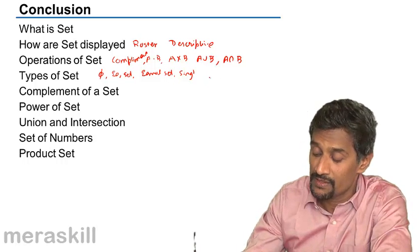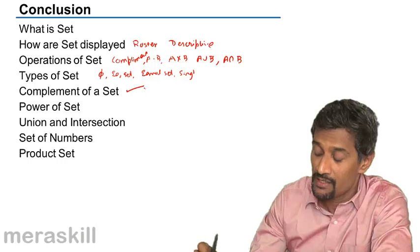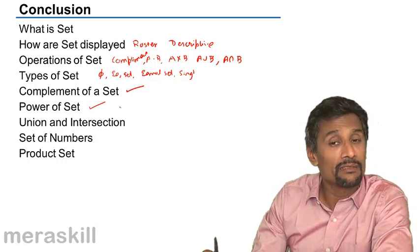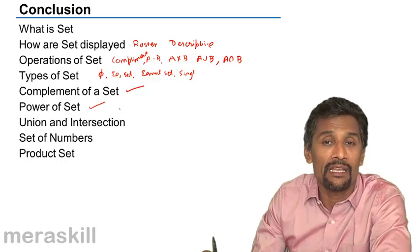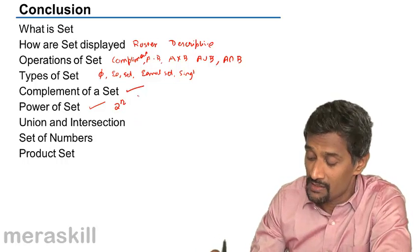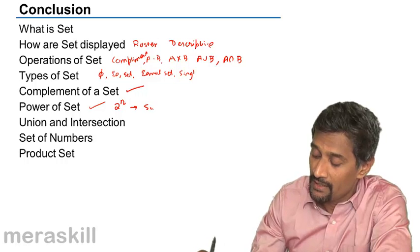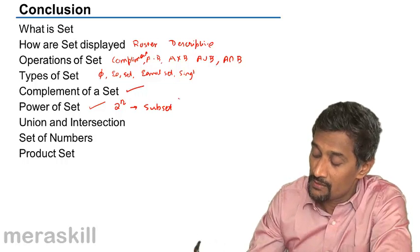Complement of a set, power of a set - which is the number of subsets that a given set can have, which is nothing but 2 raised to n. The number of proper subsets is 2 raised to n minus 1.